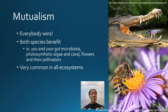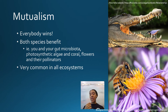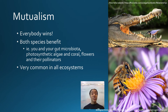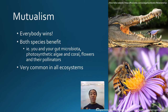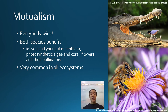In mutualism, everybody wins — both species benefit. Examples include these little birds that eat leftover food and bugs in an alligator's teeth: the bird gets food and the alligator gets its teeth cleaned, protecting it from disease. Same thing with the bee and the flower: the bee gets pollen and nutrients, and the flower gets a pollinator as the bee moves from flower to flower. Mutualism is very common in ecosystems — we wouldn't have the world we have without it. It's probably one of the most common interactions in an ecosystem.